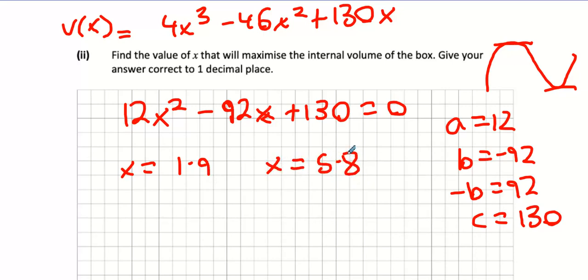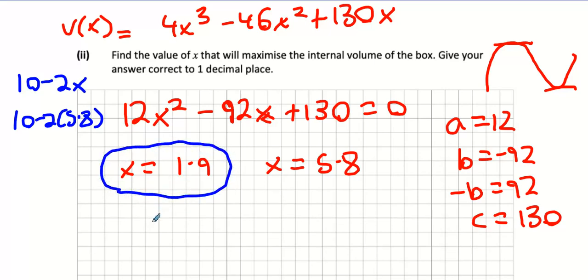Now one of those answers is not possible. Think about it. Wasn't one of our lengths 10 minus 2x? Why is 5.8 not possible? Too large, because that means it will be negative. So we're going to go x equals 1.9. What do I have to do to find the value of x? I did it, it's 1.9, done.